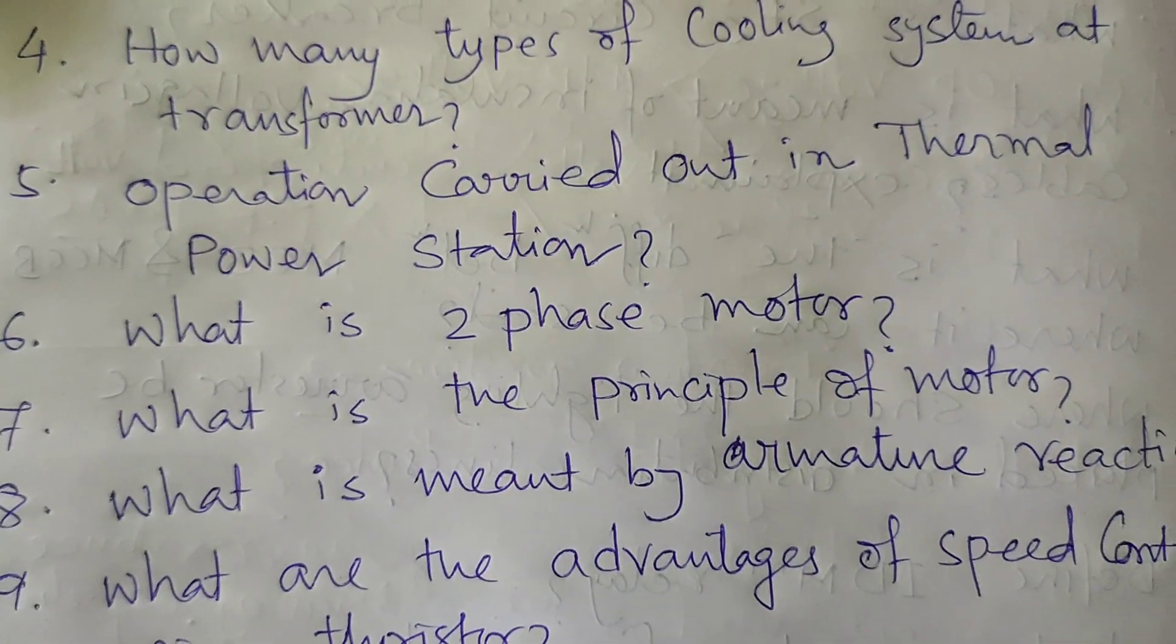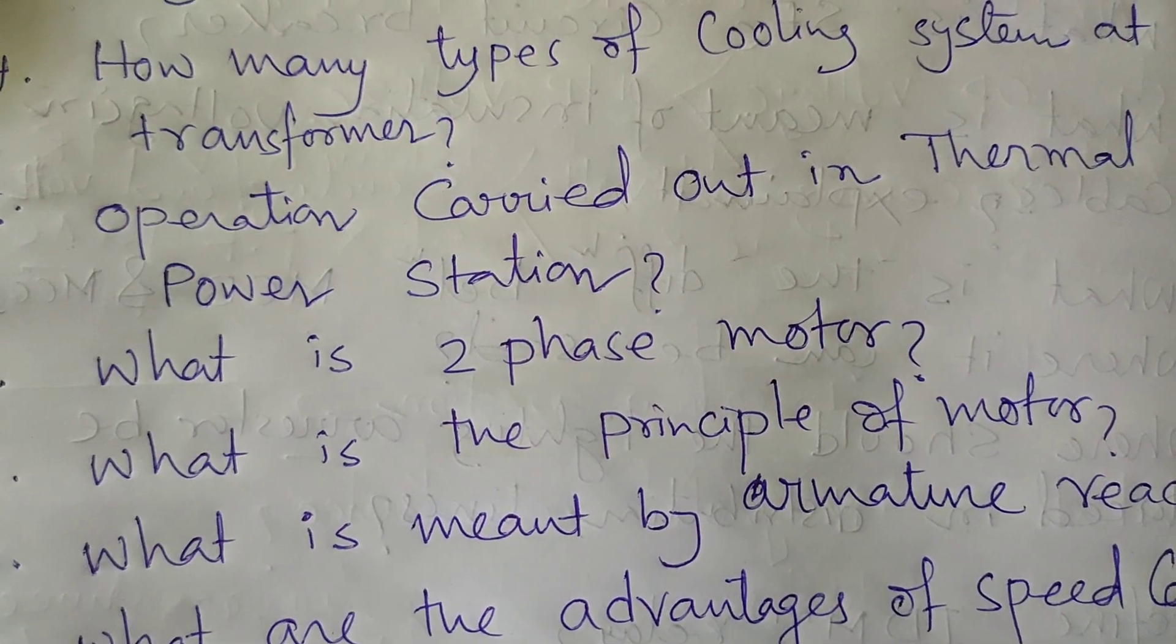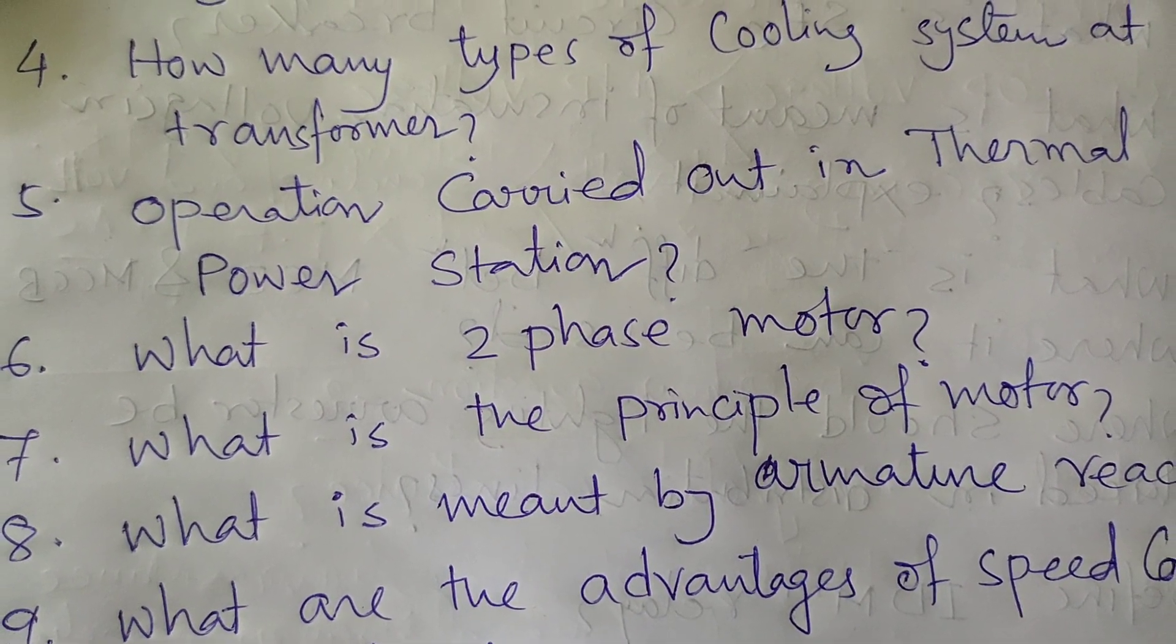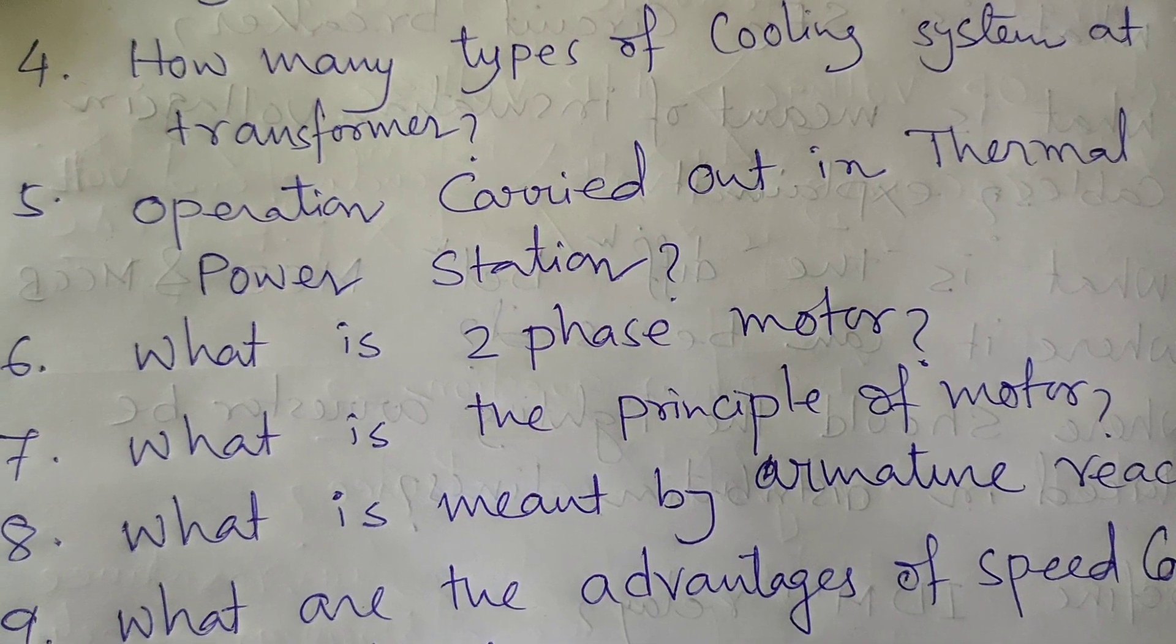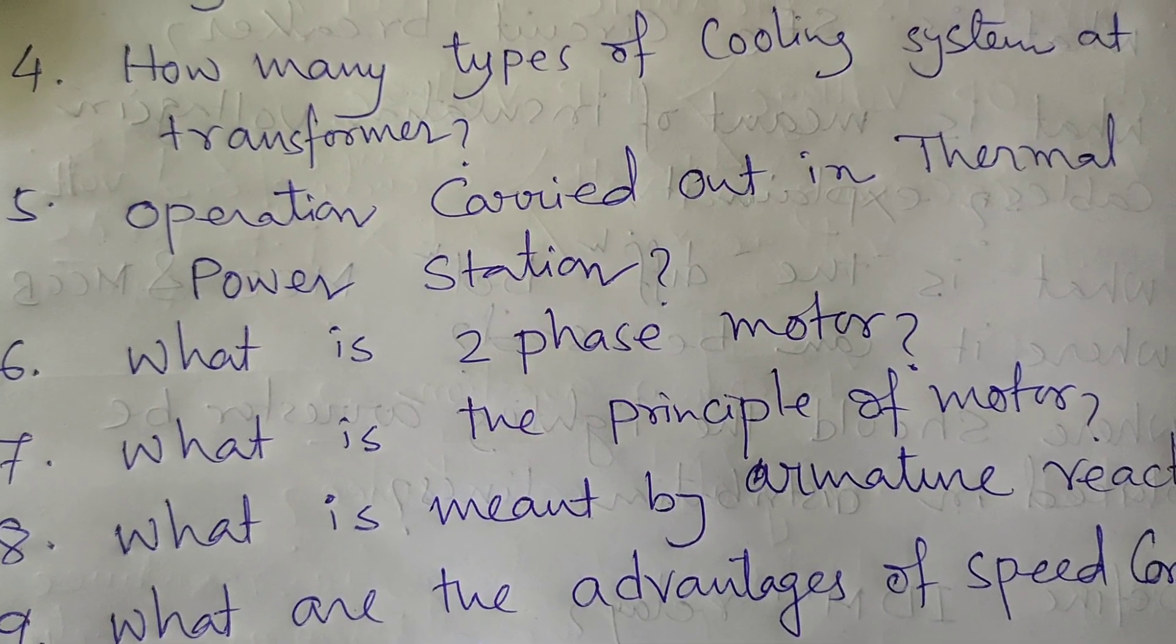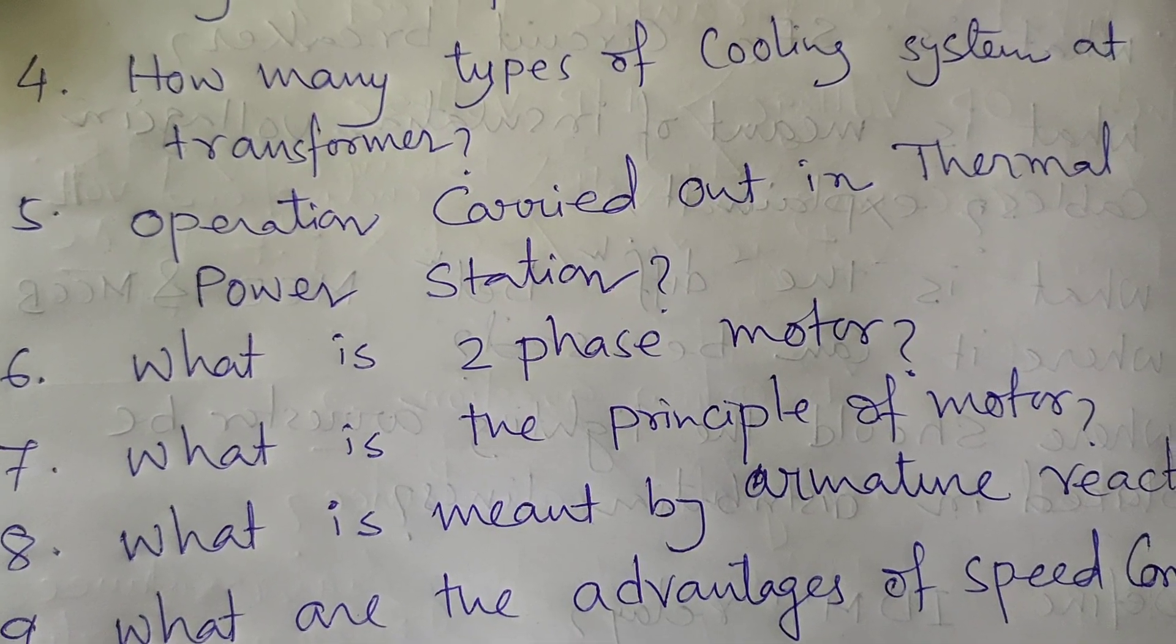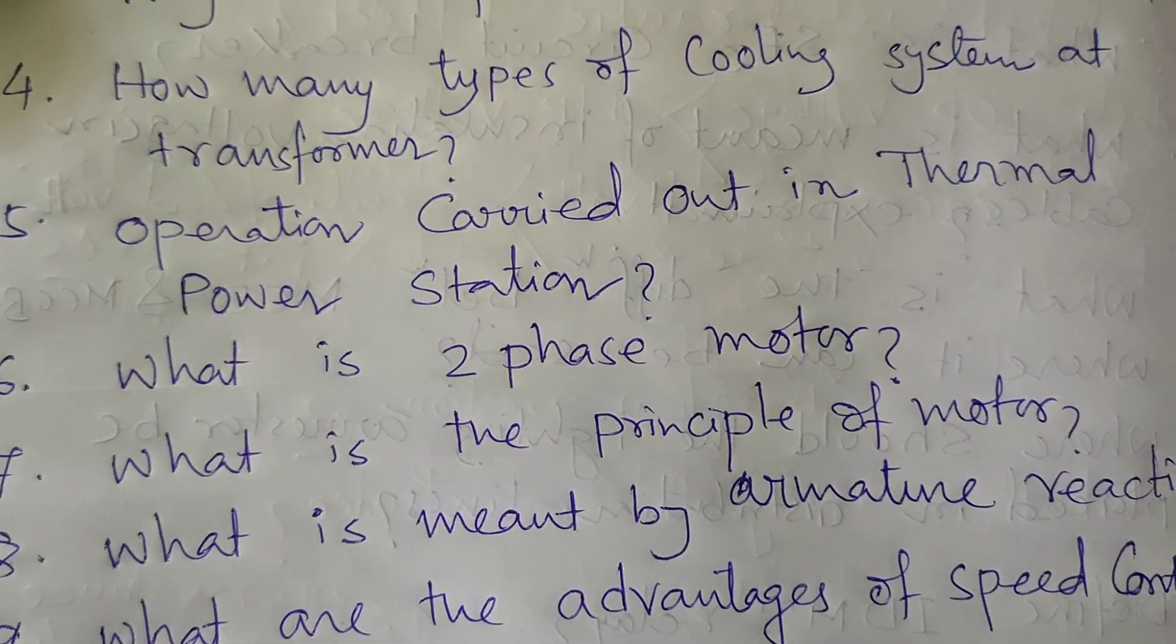Seventh question: What is the principle of motor? Whenever a current-carrying conductor is placed in a magnetic field, it produces a turning or twisting moment called torque. With the help of this energy, the motor is started.